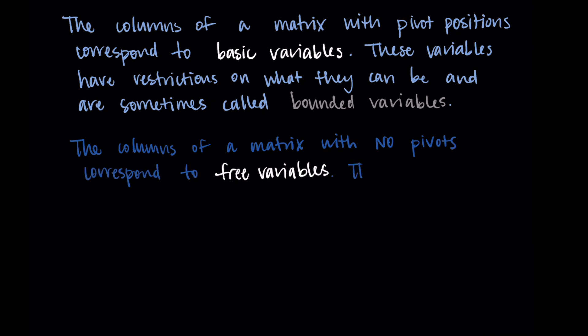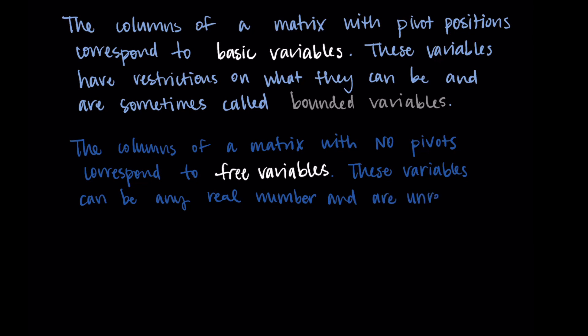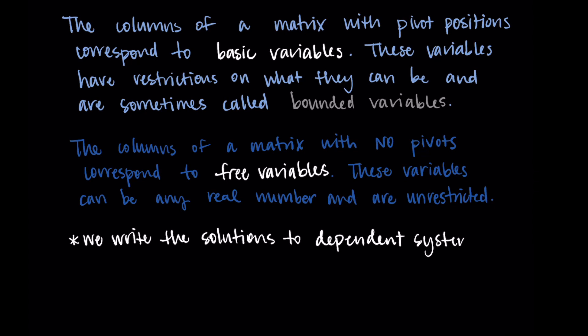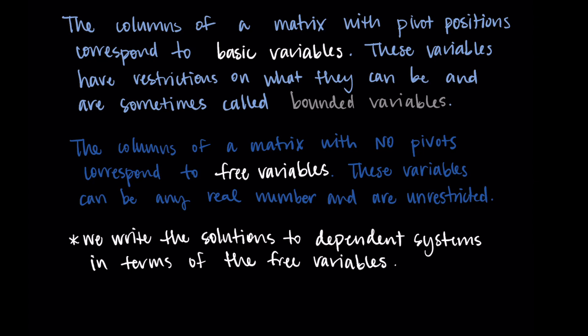A free variable can be any real number — it's completely unrestricted. When writing solutions to dependent systems, we express them in terms of the free variables, which act as parameters. One important note: basic and free variables correspond to the coefficient matrix only — not the augmented section. The augmented part represents what's on the other side of the equal sign and has nothing to do with the variables.